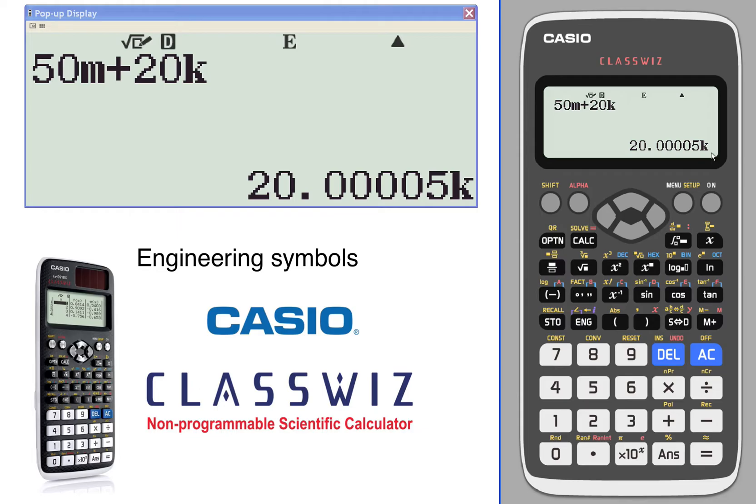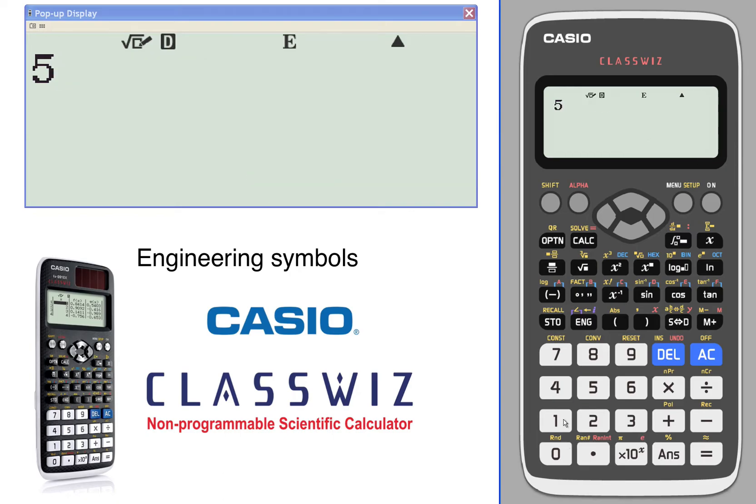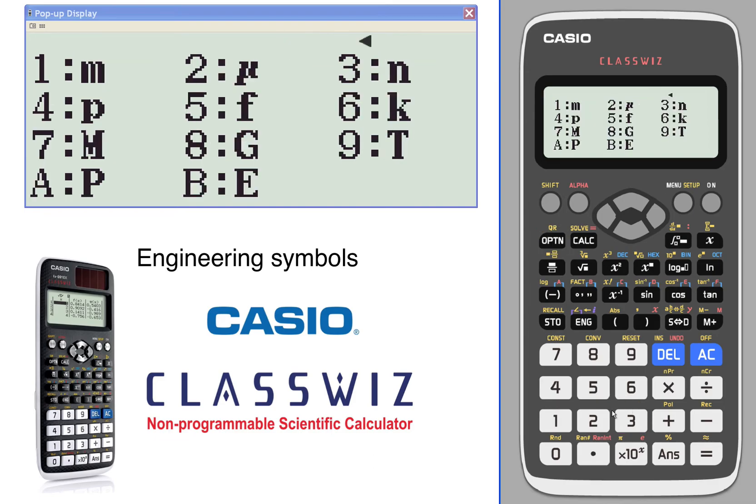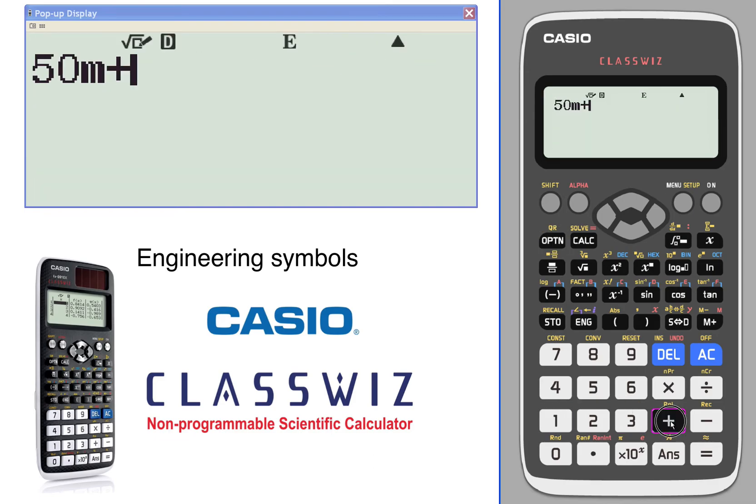Our solution comes out in engineering notation, so it's 20.005 K. You can add similar ones, so let's go 50 M plus 53 M.